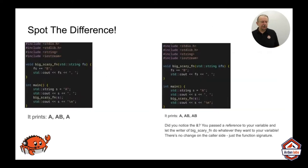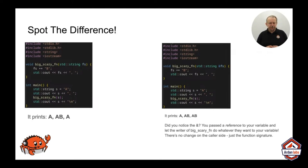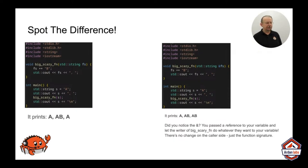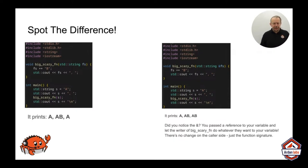This is a bit of C++, and we're going to play a game of spot the difference. There is one character difference between the two, and the output is different from each program. In the first one, big scary function — I named it that because it represents a big scary function that does something. It's two lines of code, but in the real world just pretend it's huge and you don't quite know the internal details. Somebody else wrote it. So you make a string, put 'a' in it, print that out, run the function, and then print what you've got in the string again.